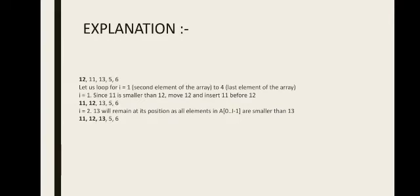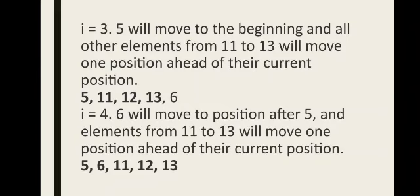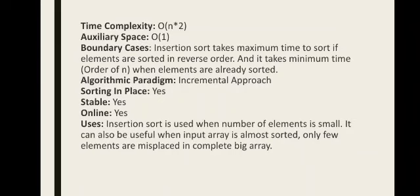For i equals 1, since 11 is smaller than 12, we move 12 and insert 11 before it: giving us 11, 12, 13, 5, 6. For i equals 2, 13 remains at its position as all prior elements are smaller. For i equals 3, 5 moves to the beginning and all elements from 11 to 13 shift one position ahead: 5, 11, 12, 13, 6. For i equals 4, 6 moves to the position after 5: giving us 5, 6, 11, 12, 13.